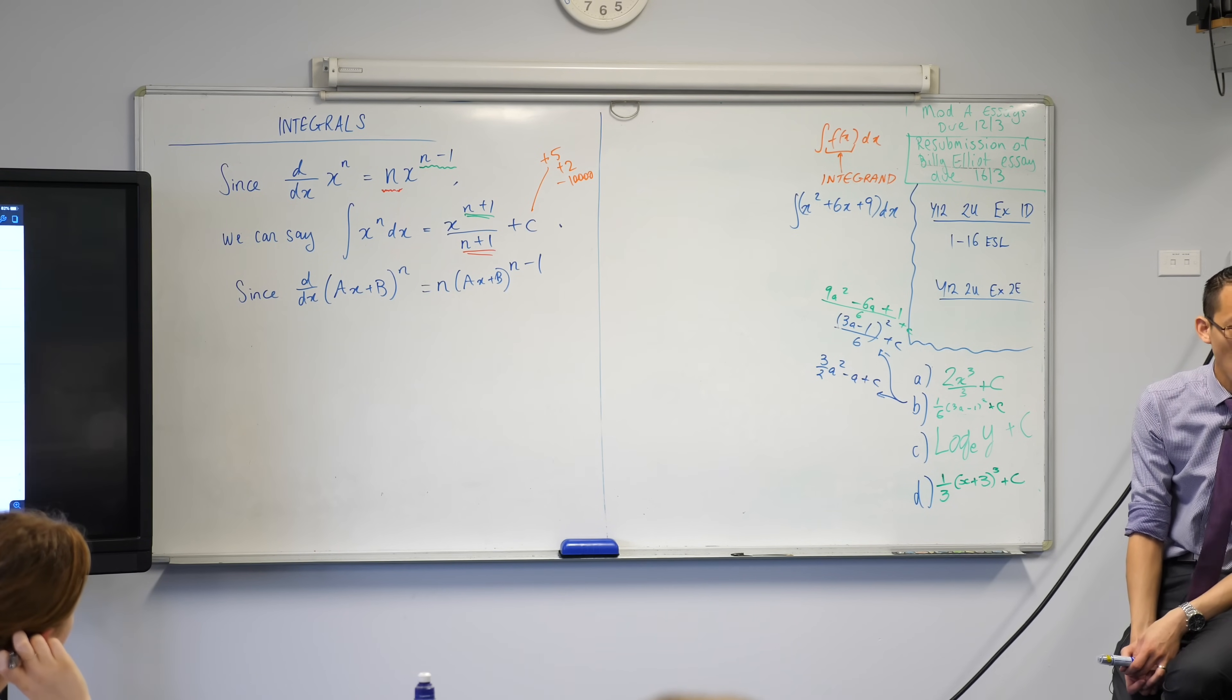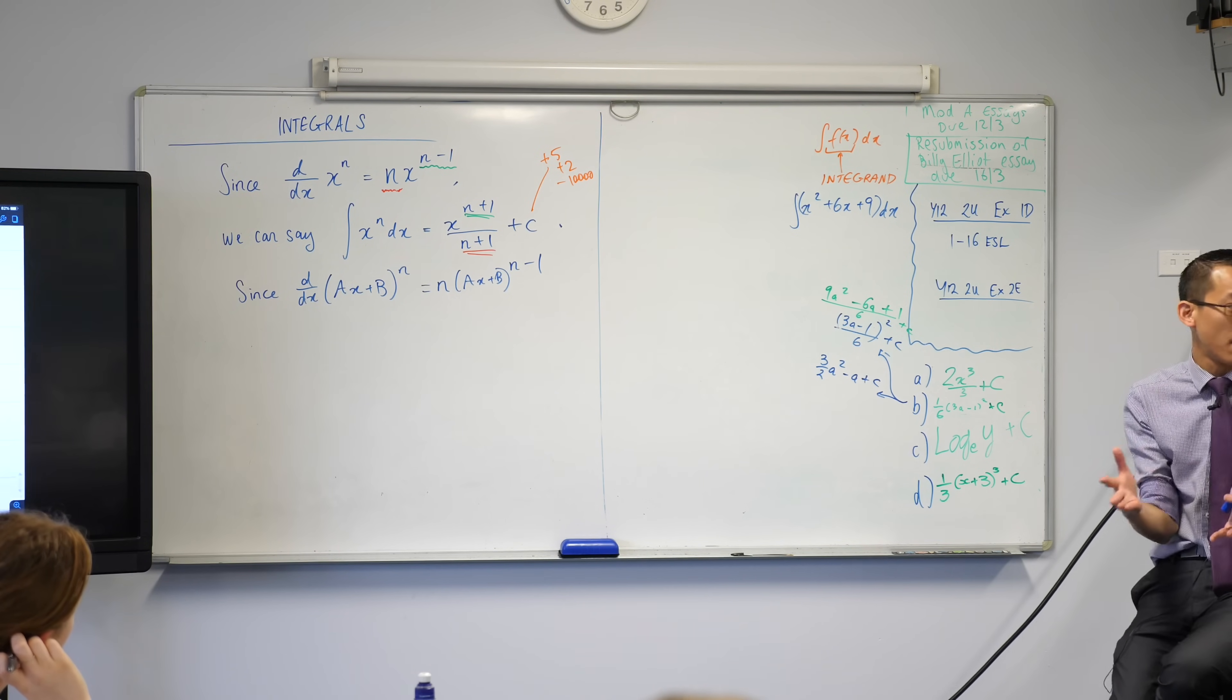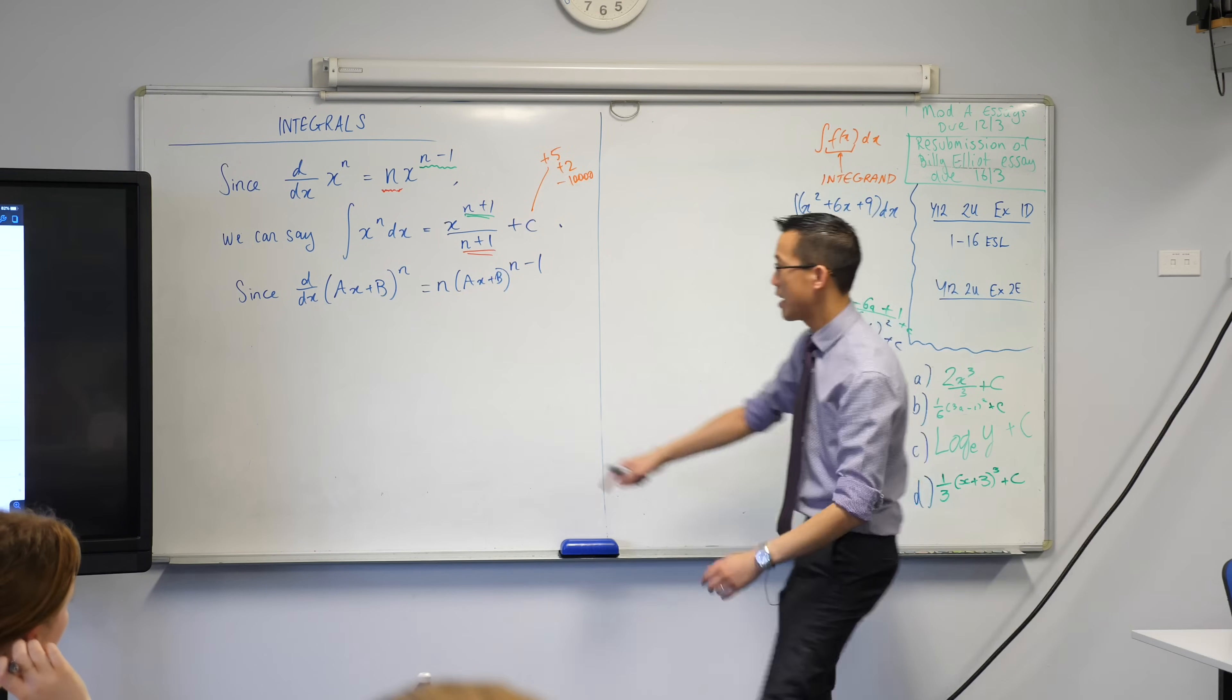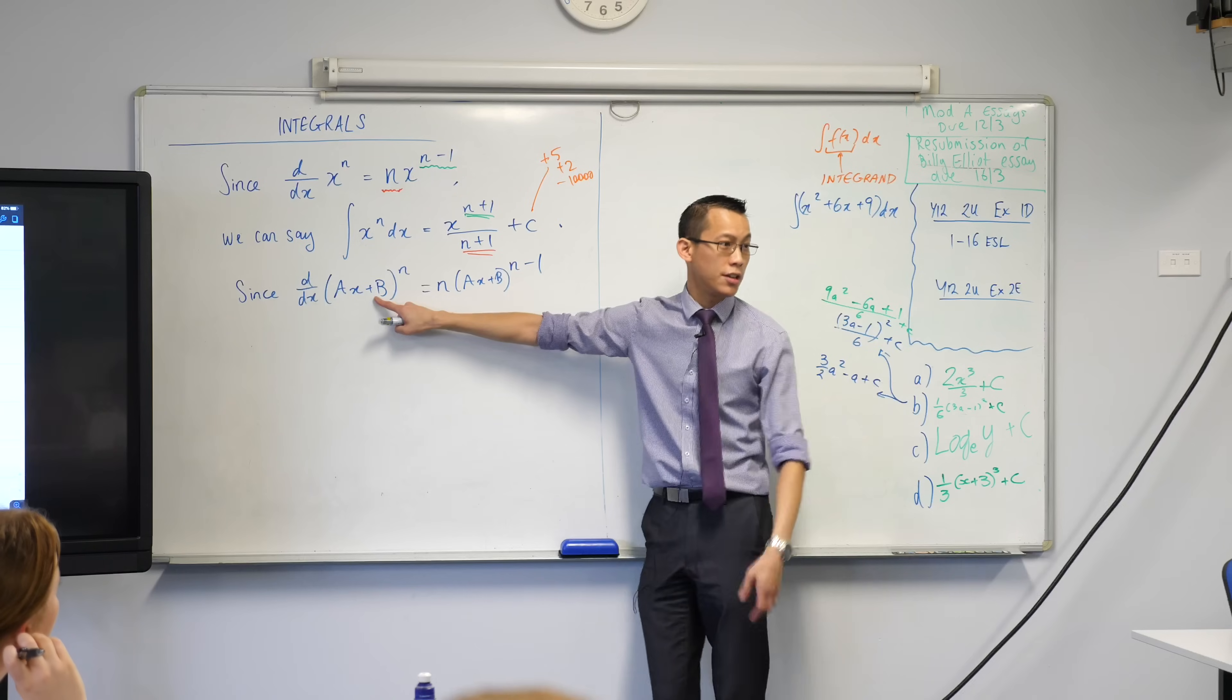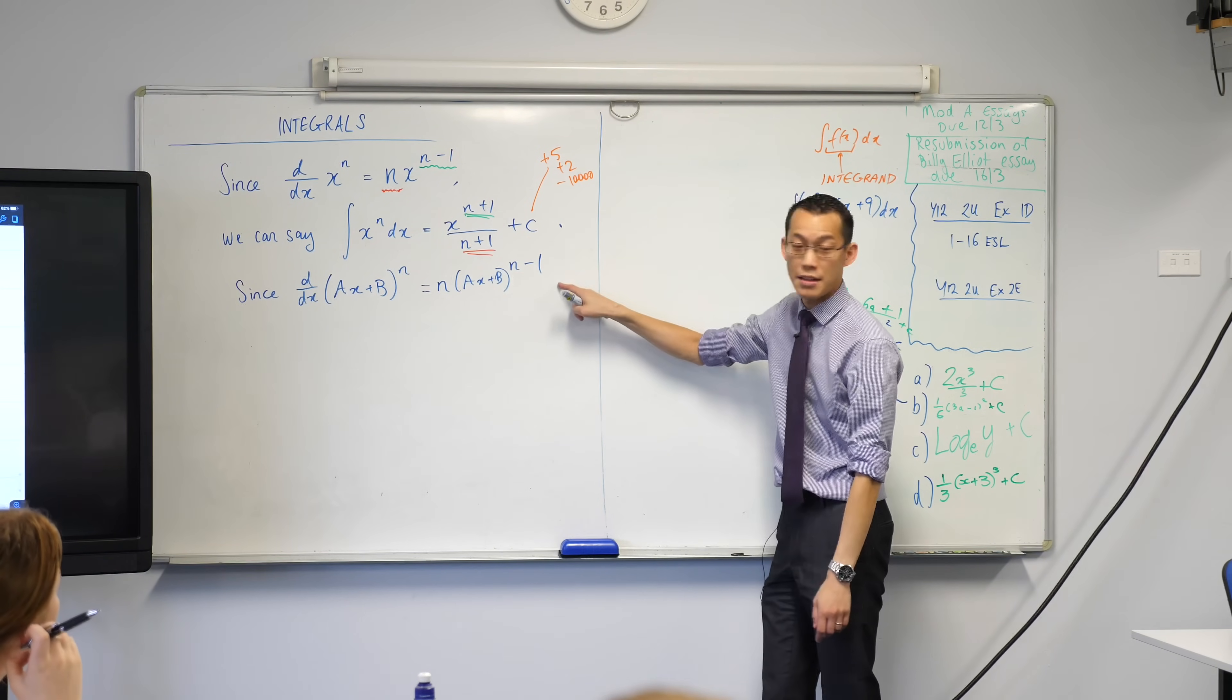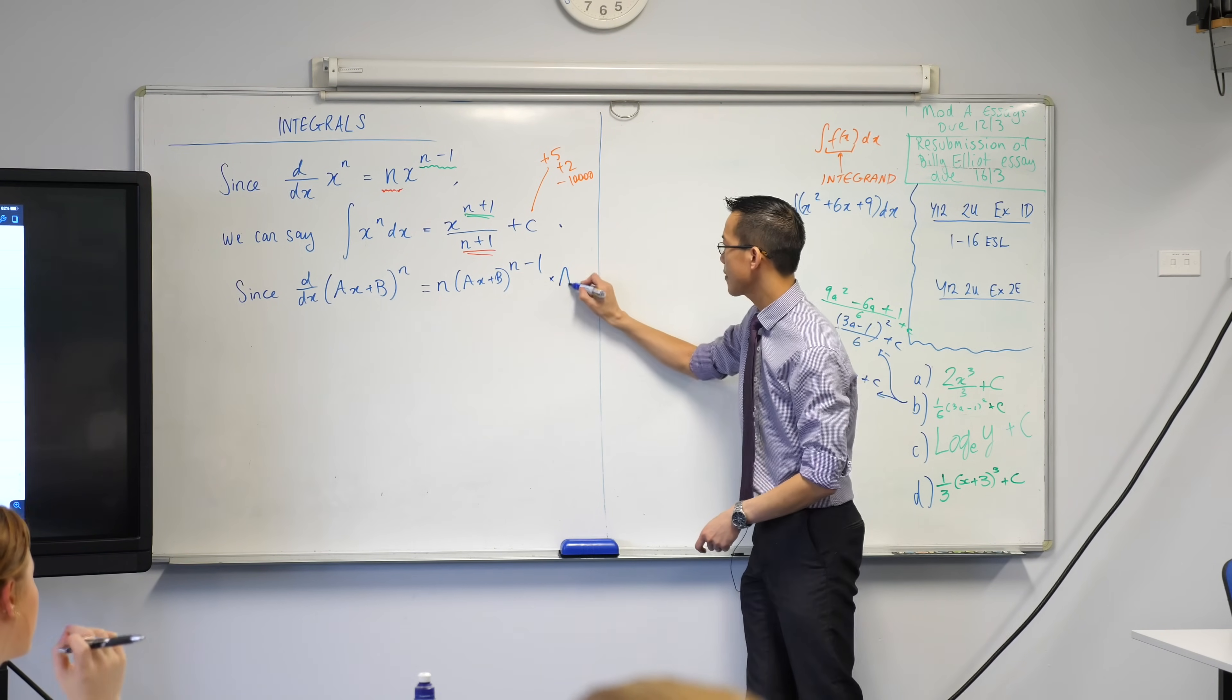In this case, have a look. Oh, the inside function is ax plus b, so its derivative is, it's just a, right? That coefficient there. We know if you differentiate a constant like b, it's just, it goes, okay? So I can multiply this whole thing by a. I'm done.